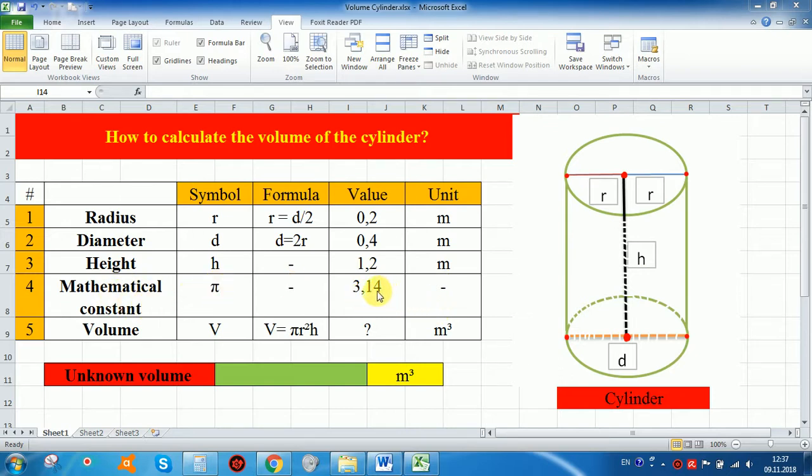This value is 3.14, it's a stable constant, and volume we must calculate. Let's look at this cylinder. Radius means this side is radius, from here to here, as this picture shows.